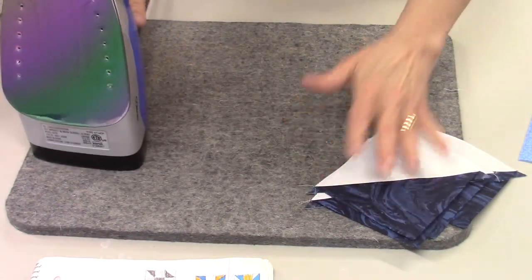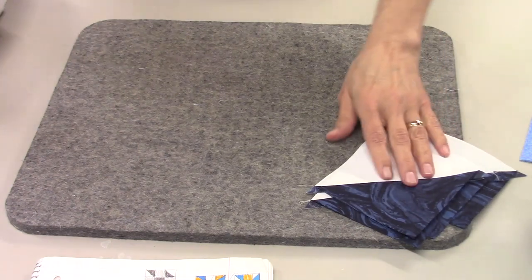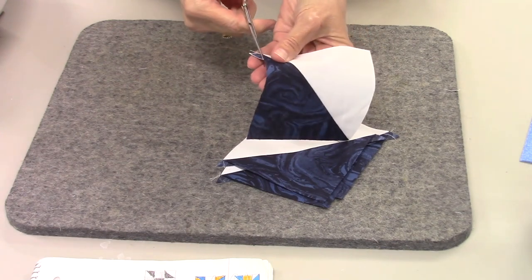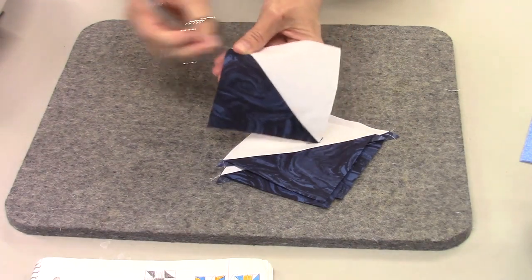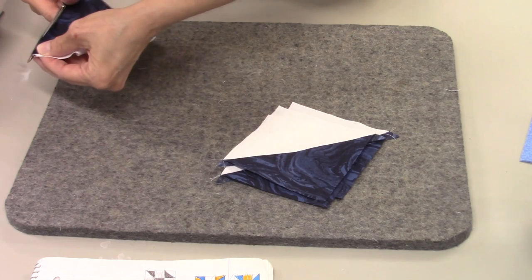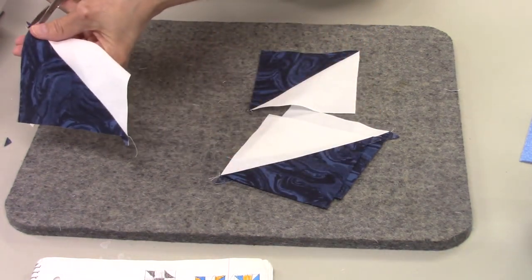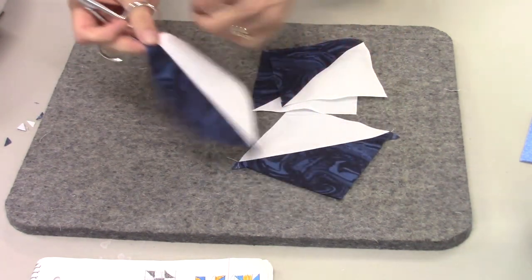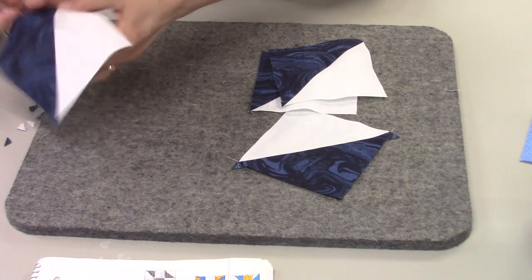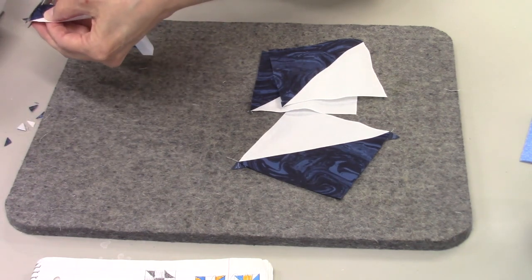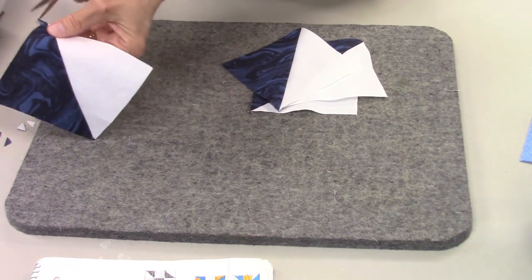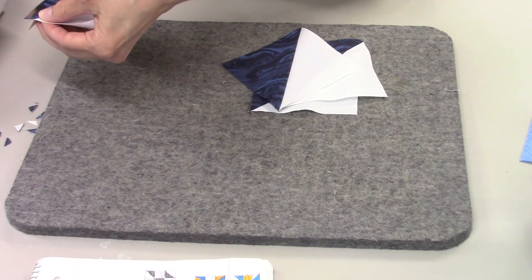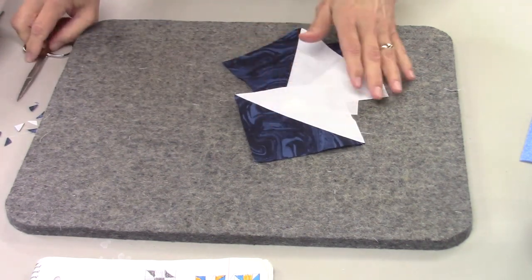Now I want to trim the dog ears off because they don't serve any purpose. They just create bulk, they get in my way, and they bother me, so I'm going to cut them off. They really don't serve any purpose and they will create extra bulk in your quilt. I find I get a better finish if I trim those off.